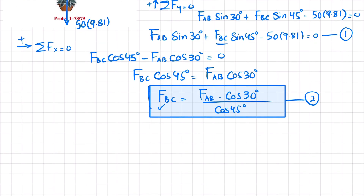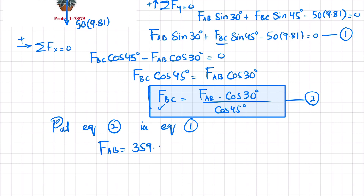Substituting Equation 2 into Equation 1, we get F_AB equal to 359.07 N. Substituting F_AB back into Equation 2 gives F_BC equal to 439.77 N.